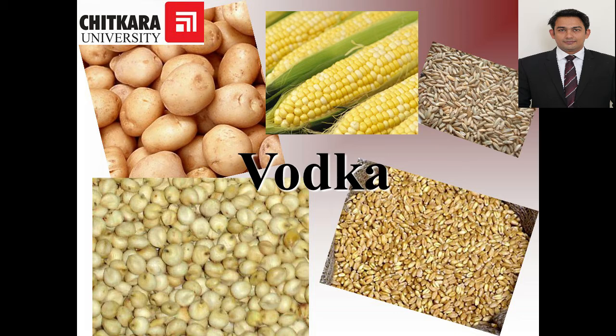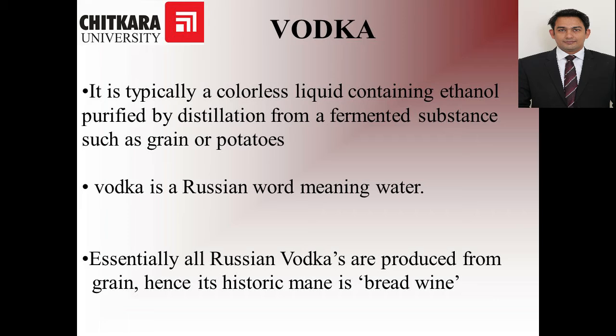Vodka, as you can see on the image, can be prepared from all these ingredients such as potato, corn, rye, sorghum and barley. Any of these ingredients can be used for the production of vodka. So let's understand how the process goes on.